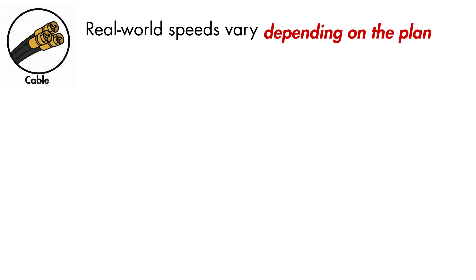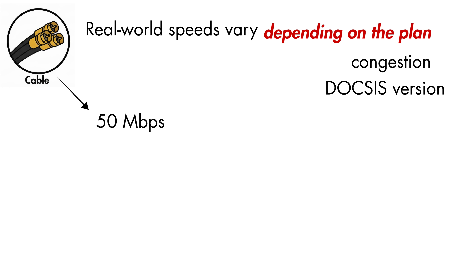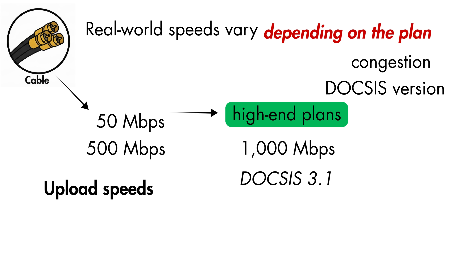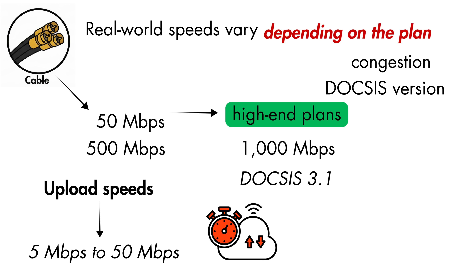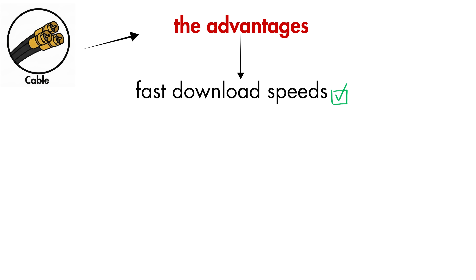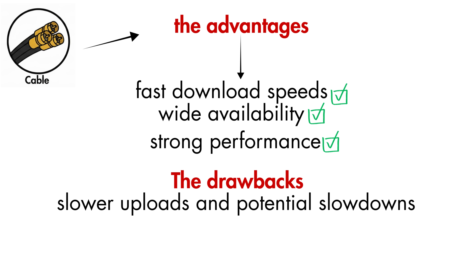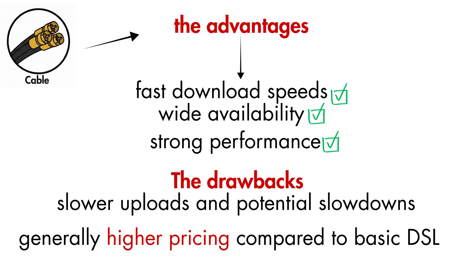Because everyone in a neighborhood segment shares the same line, cable internet operates as a shared medium, which is why speeds may change depending on how many people are online. Typical download speeds range from 50 Mbps to 500 Mbps, while high-end plans reach 1,000 Mbps or more with DOCSIS 3.1. Upload speeds are usually much lower, ranging from 5 to 50 Mbps. Latency is generally low, around 10 to 40 ms, making cable suitable for gaming, streaming, and video calls. The main drawbacks are slower uploads and potential slowdowns during peak hours due to shared bandwidth, along with generally higher pricing compared to basic DSL.